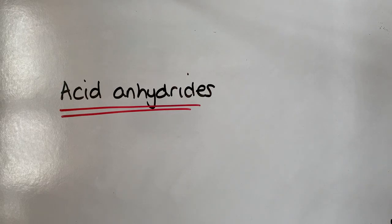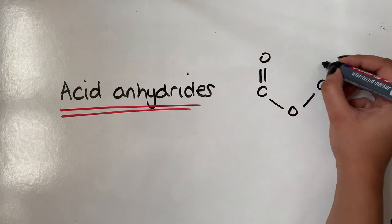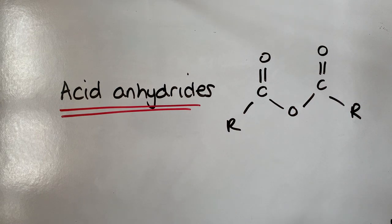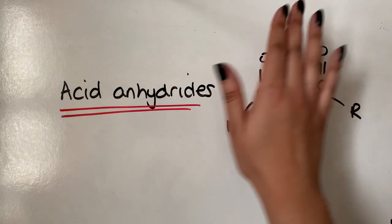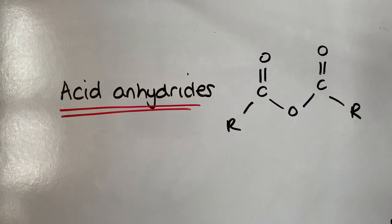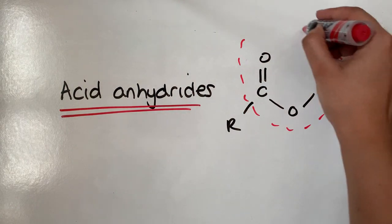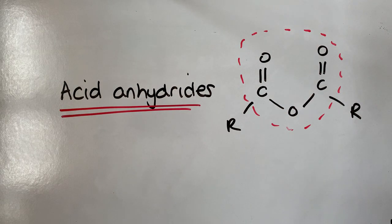We're now going to look at acid anhydrides, which is another carboxylic acid derivative because when we hydrolyse it, it will reform the parent carboxylic acid. Let's have a look at what we mean by an acid anhydride. The R groups are going to be the same in this case, and it is kind of made from the parent carboxylic acid — we've got two of them merged together. The functional group is where you've got an oxygen directly between two carbonyl groups, and that is the acid anhydride functional group.